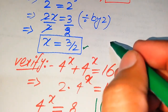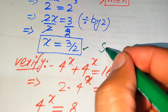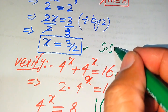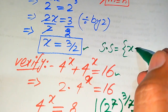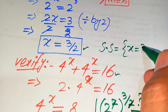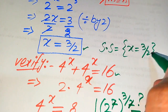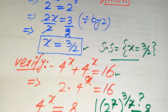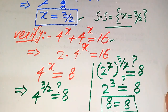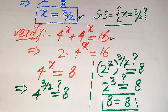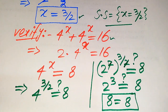We conclude that the solution set of the given equation is x equals 3 over 2. This is the only solution to the given question and our final answer. Thank you so much for watching this video — please subscribe to my channel for more exciting videos.